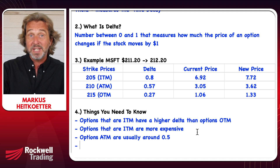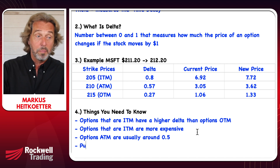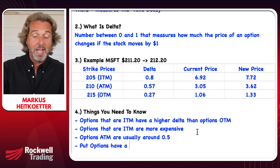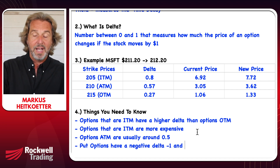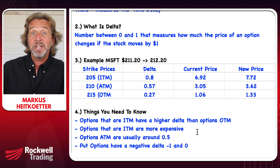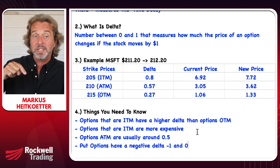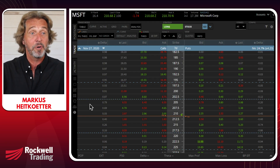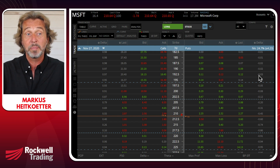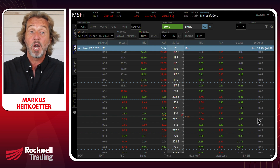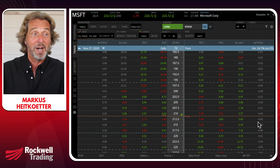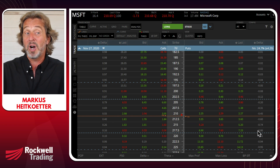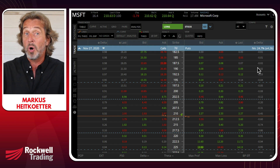We've just talked about call options. Put options have a negative delta, which is between minus 1 and 0. That's because the price of a put decreases if the stock goes up. So when you look at the put side of the option chain, you'll see that all deltas are negative. Put options that are in the money are closer to minus 1, while options out of the money don't move a whole lot.